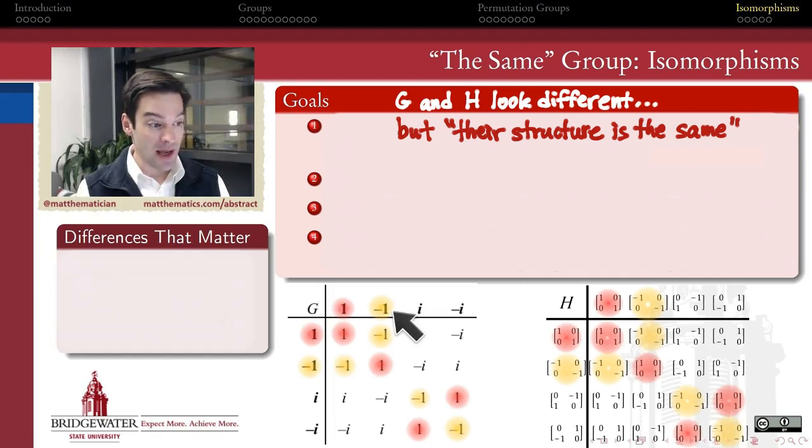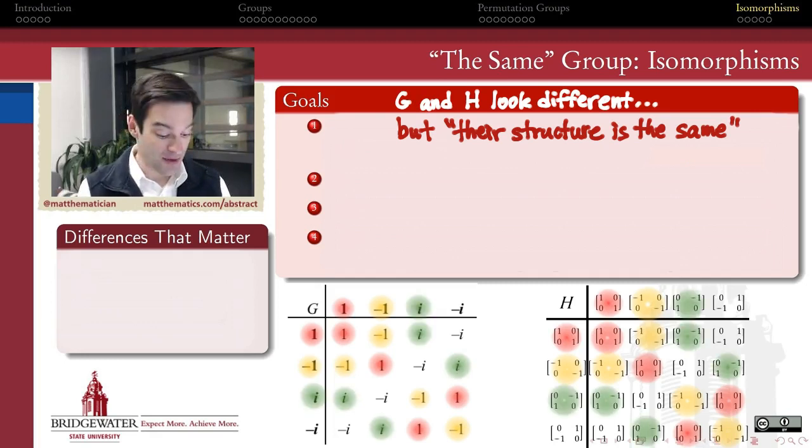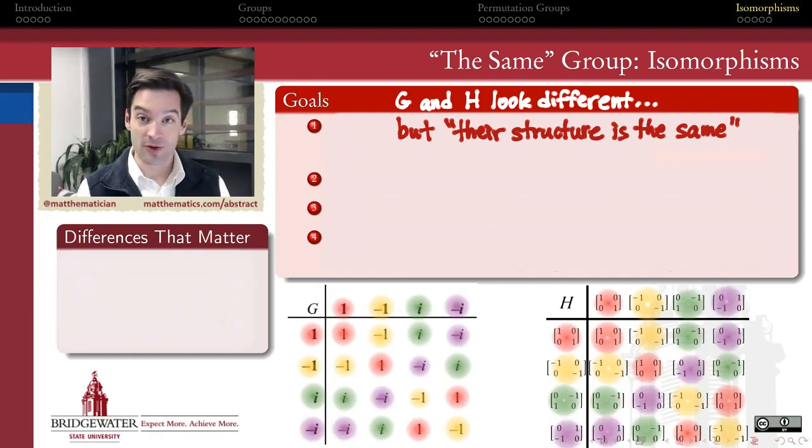The same thing is true of the element -1 and of this opposite identity matrix over here on the right hand side. They occupy the same places in the respective Cayley tables. And so we expect that they act like one another. Same thing with i. Perhaps surprisingly, the complex number i and this two by two matrix also occupy the same places. They play the same role in their respective Cayley tables. And then finally, the same is true of this last element.